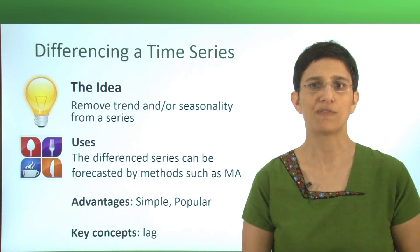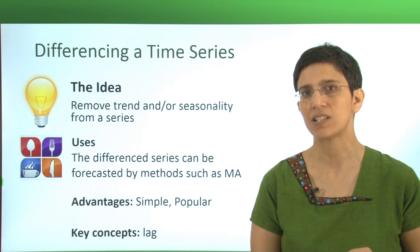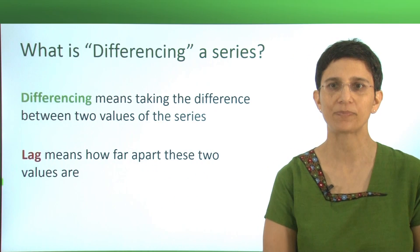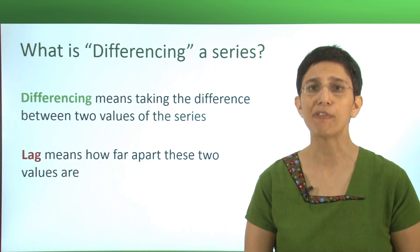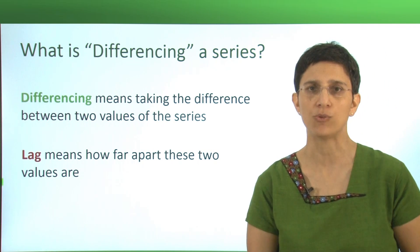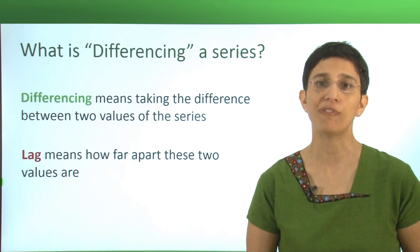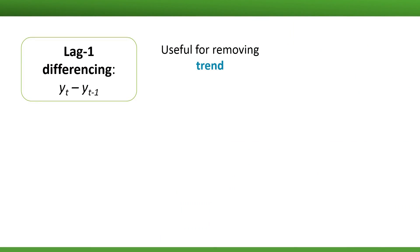The differencing operation is very simple, and that's why you'll find that it's pretty popular. The key concept in differencing is called the lag. The differencing operation means taking the difference between two values in a time series. The lag tells us how far apart these two values are going to be. Lag one differencing means taking the difference between each two neighboring values. This is useful for removing trend from a series, since the series of differences, or jumps between values, will no longer contain a trend.